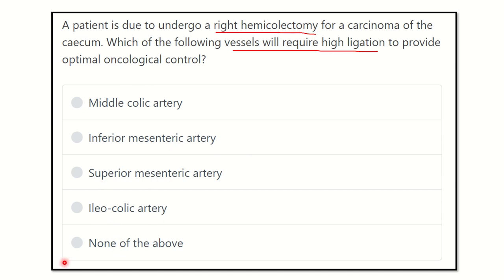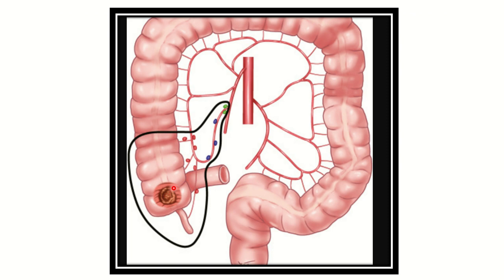First, let's identify the anatomy. Here we can see the cecum, ascending colon, transverse colon, descending colon, sigmoid colon, rectum, and anal canal. In the case of carcinoma of the cecum, the cancer may spread through this area via the lymphatics, which are usually present along the blood vessels.